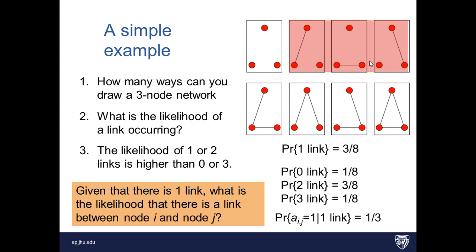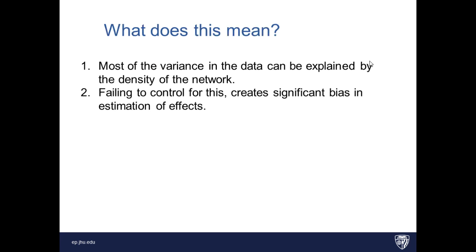Well, why is that important? It's important because a lot of the variance in likelihood between two nodes being connected can be explained by the density of the graph. And so this becomes something that we want to control for when we're doing statistical analysis of the network.